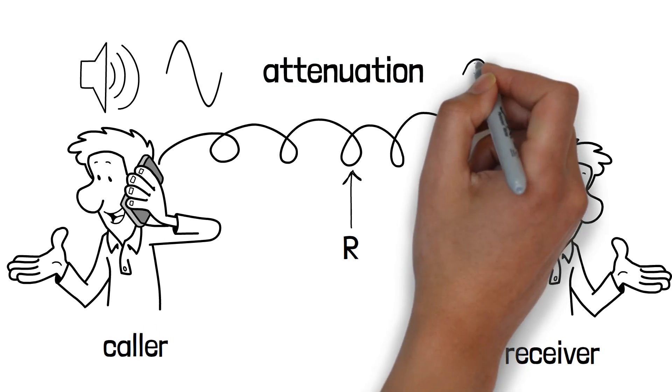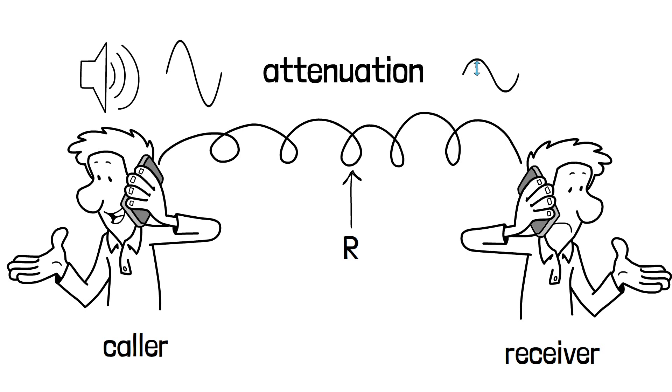It decreases the amplitude of the signal obtained at the receiver, which reduces the volume of the sound the receiver hears.